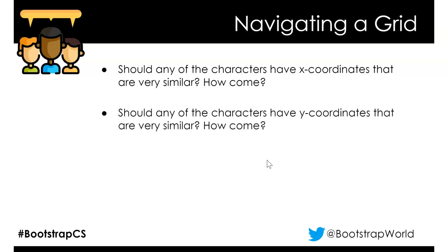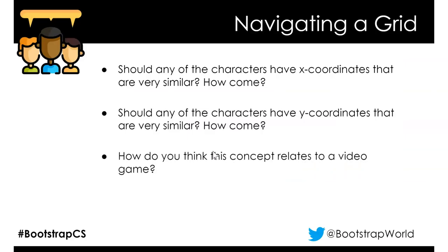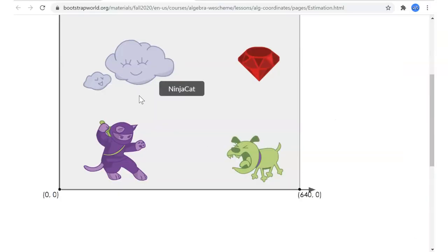Should any characters have similar Y-coordinates? That means they're a similar distance from the X-axis. Danger dog and Ninja Cat have similar Y-coordinates, and the ruby and the cloud have similar Y-coordinates. How does this relate to a video game? When we move Ninja Cat around the screen, we're changing the X-coordinate or the Y-coordinate, trying to get closer or farther away from one of these elements.